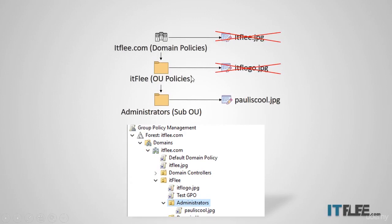Let's take another example. At itflea.com we have itflea.jpg configured; at the OU itflea we have ITF logo; and under the sub-OU administrators we have pauliscool.jpg. I've named the GPOs after the background file names to make it clearer. Since we're going down to a sub-OU, pauliscool.jpg will win, following the local, site, domain, OU, enforced order.